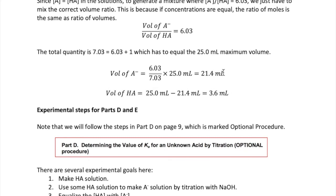So, in other words, mixing 21.4 milliliters of A minus with 3.6 milliliters of HA will yield a buffer solution with pH of 6.00. In the next video, I will talk about the experimental steps for parts D and E.